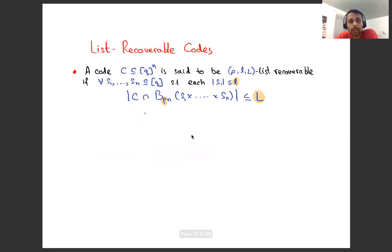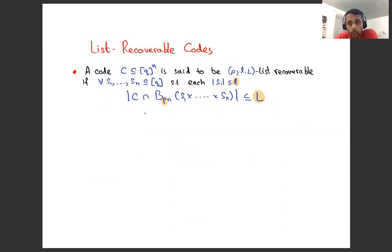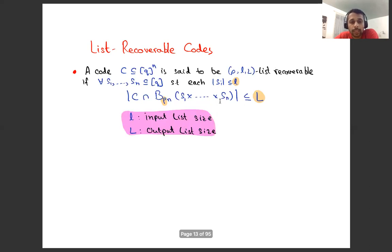Formally, a code C is said to be (ρ, ℓ, L) list recoverable if for every S₁, S₂, …, Sₙ — subsets of Q (the alphabet), each of size at most little ℓ — the number of codewords in a Hamming ball of radius ρn around S₁ × S₂ × … × Sₙ is at most capital L. Here ρ refers to the fraction of errors you can tolerate, little ℓ is the bound on the size of each Sᵢ (called the input list size), and capital L is the output list size.